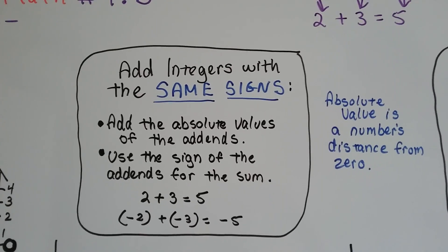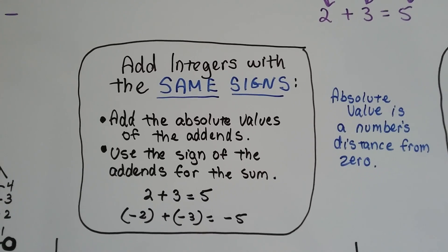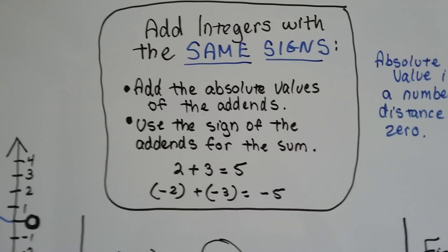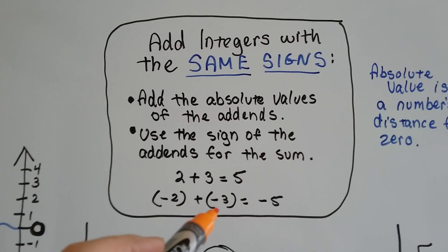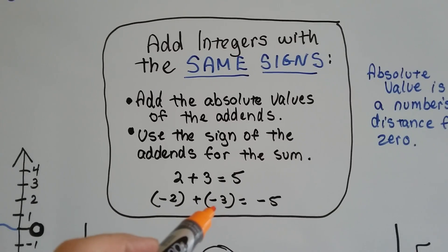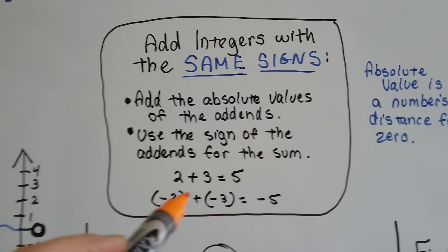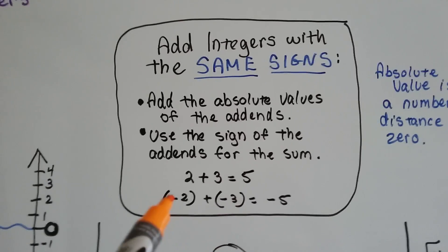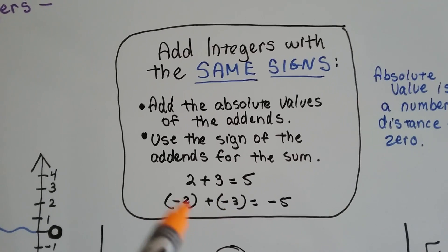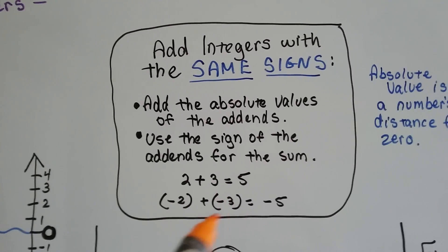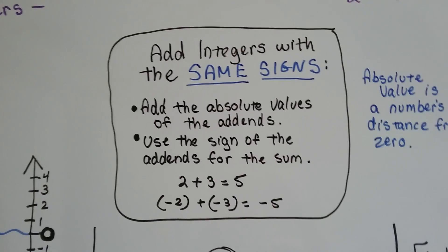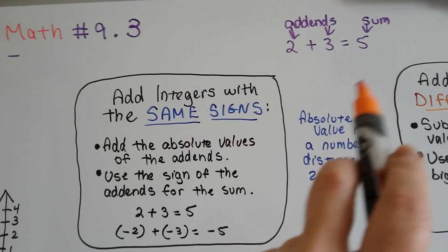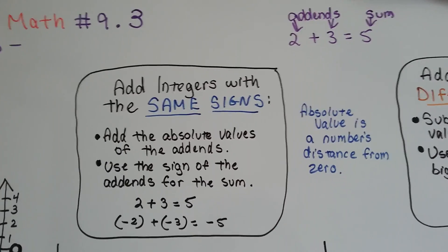Remember, absolute value is its distance from zero. So the absolute value of negative 2 is 2, and the absolute value of negative 3 is 3. We add the 2 and the 3 — their absolute values — and get 5, and we use whatever sign is shared with the addends. They both have a negative, so we use a negative. These are addends; you add them together and the sum is the answer.